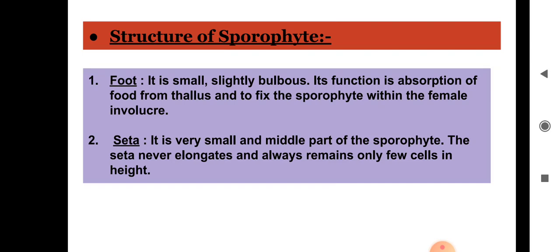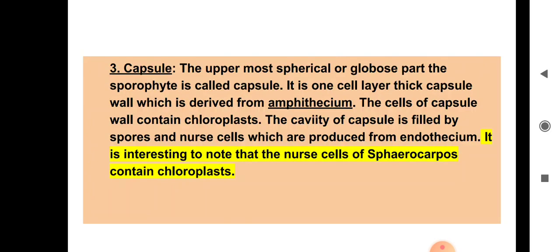Next is the seta — it is very small and is the middle part of the sporophyte. The seta never elongates; it always remains only a few cells in height. Above it is the capsule, which is the uppermost spherical or globose part of the sporophyte, with a one-cell-layer-thick capsule wall.